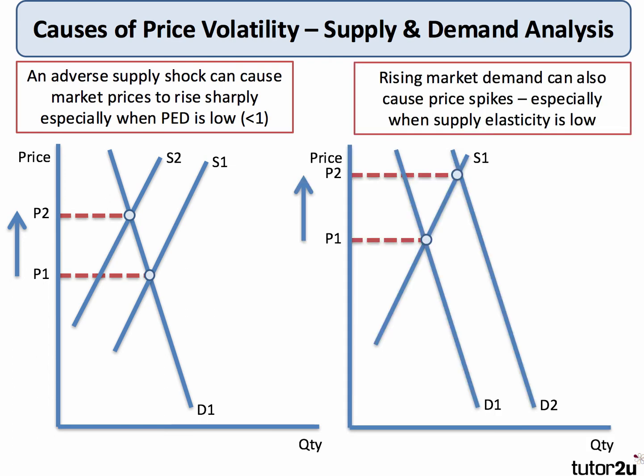Here's a second example, where we've shifted the demand curve out. This could be due to speculative demand — people going into the market to buy up available stocks of commodities in the expectation that prices will go up. Rising market demand can cause a spike in price from P1 to P2. And again, if the elasticity of supply is low, an outward shift of demand will cause a significant increase in price. Price volatility is in large part a function of low elasticity of demand and low elasticity of supply.